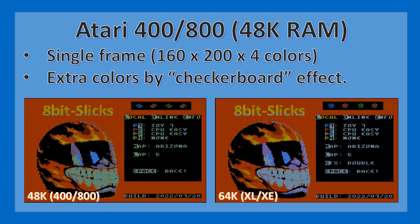The extra colors are recovered by using a checkerboard effect. On the left you can see it looks a little like a chessboard, giving a sense of the mix of two colors — which on the XL/XE is realized perfectly by flickering two frames at 50 or 60Hz. The other 8k of RAM was recovered by disabling all music playback for now, and we will see in the future if it is possible to optimize and reinstate music for this 48k Atari version.